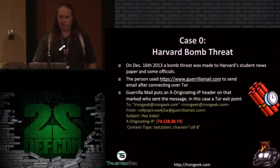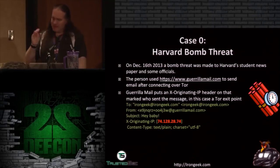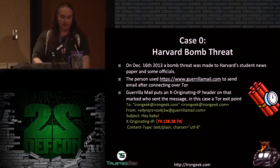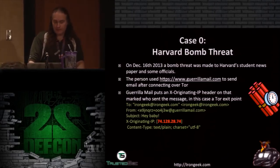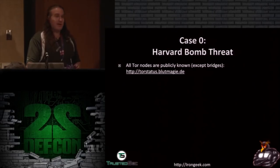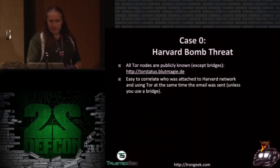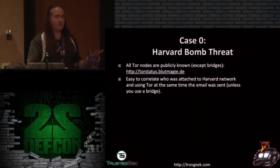He did send it over Tor, so the IP in the headers was a Tor server, not his real IP — a step in the right direction. However, all Tor nodes are public, and it's easy to determine whether a machine is a Tor node via reverse DNS lookup; many Tor nodes even have 'Tor' in their name. So investigators looked to see who was using Tor during the time the email was sent and found one particular individual. If he had been using a bridge — not advertised in Tor's directories — or had gone to a local coffee shop, he probably would have gotten away with it. Instead, he did it from the university network.